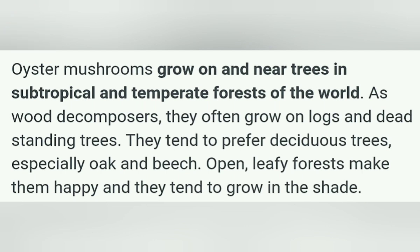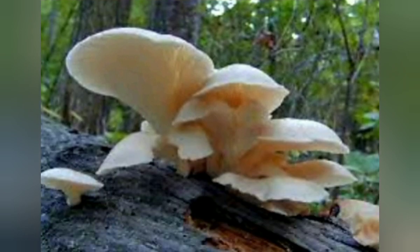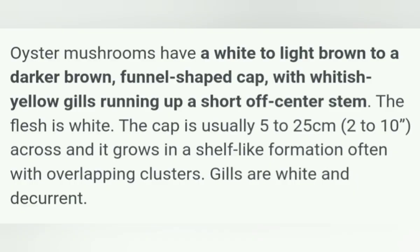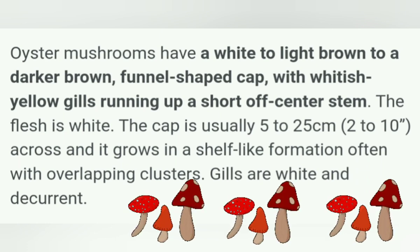Oyster mushrooms have a white or light brown to darker brown funnel-shaped cap, with whitish-yellow gills running up a short center stem. The flesh is white, and the cap is usually a little grayish in color. It grows in a shelf-like formation, often with overlapping clusters. Gills are white and decurrent.